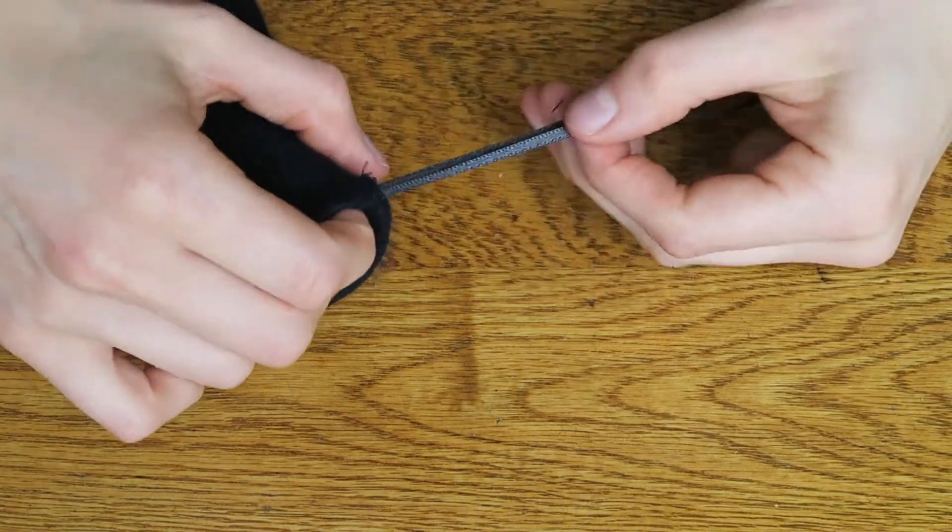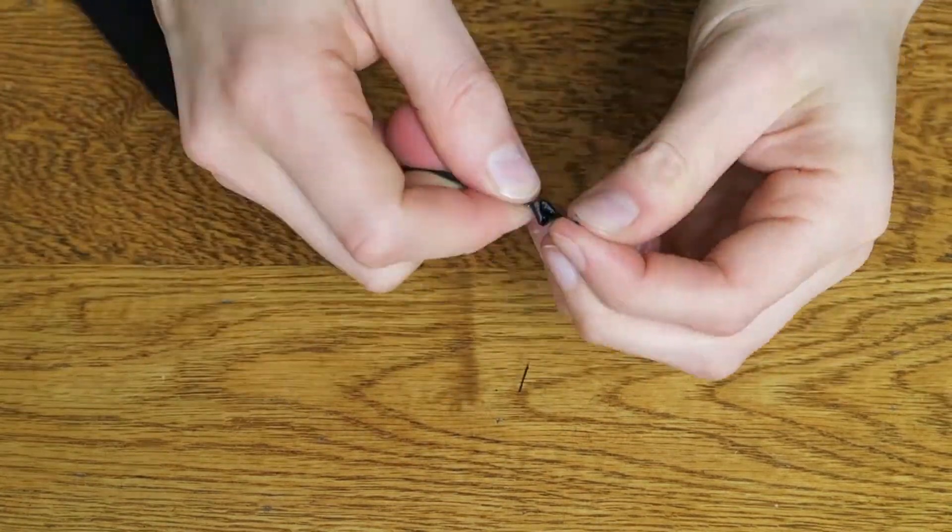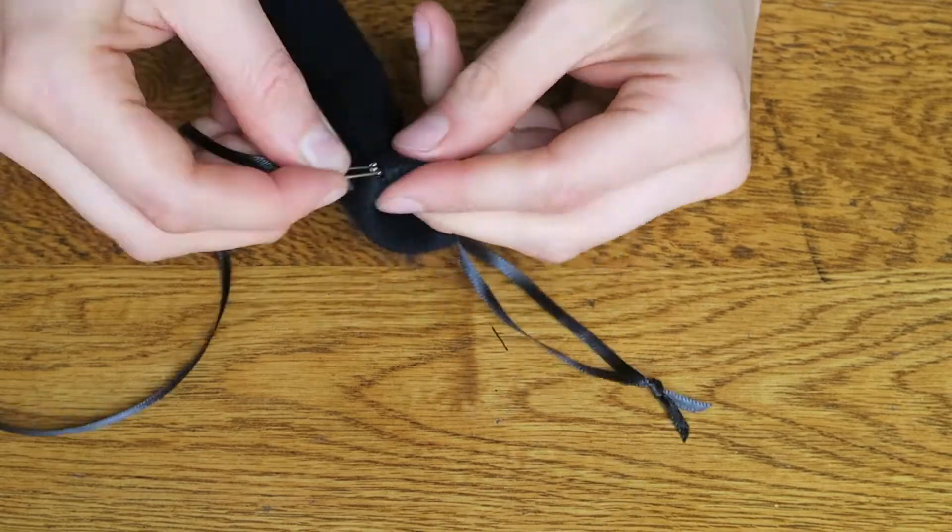Pull evenly and tie a knot at the end. Do the same with the second piece but starting from the opposite side.